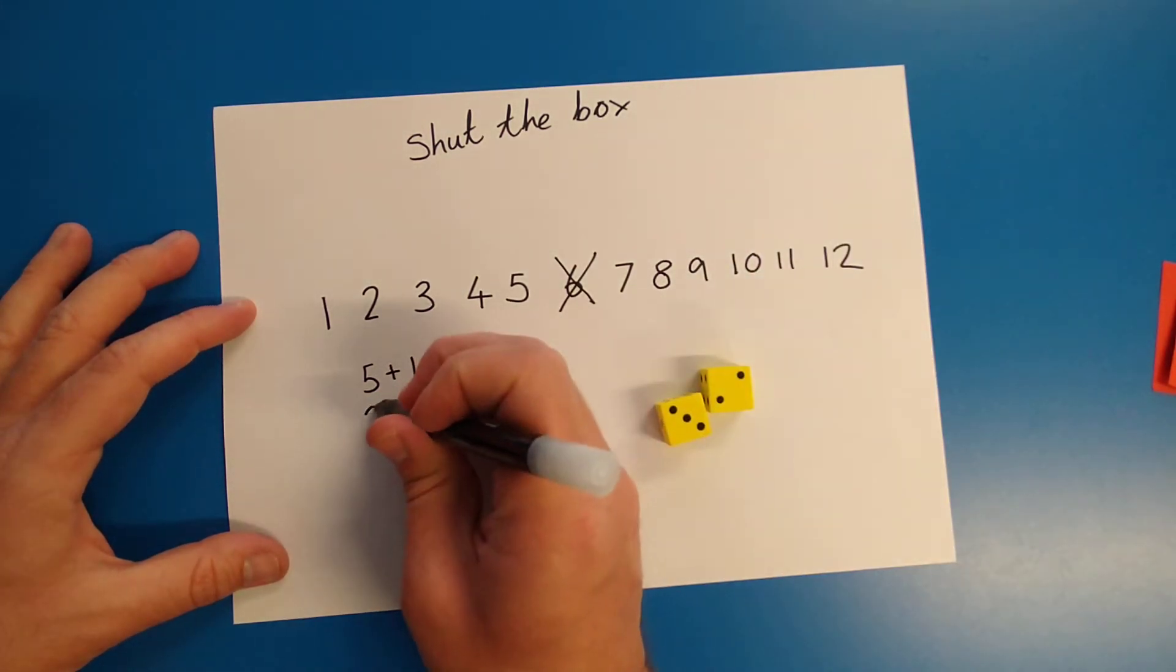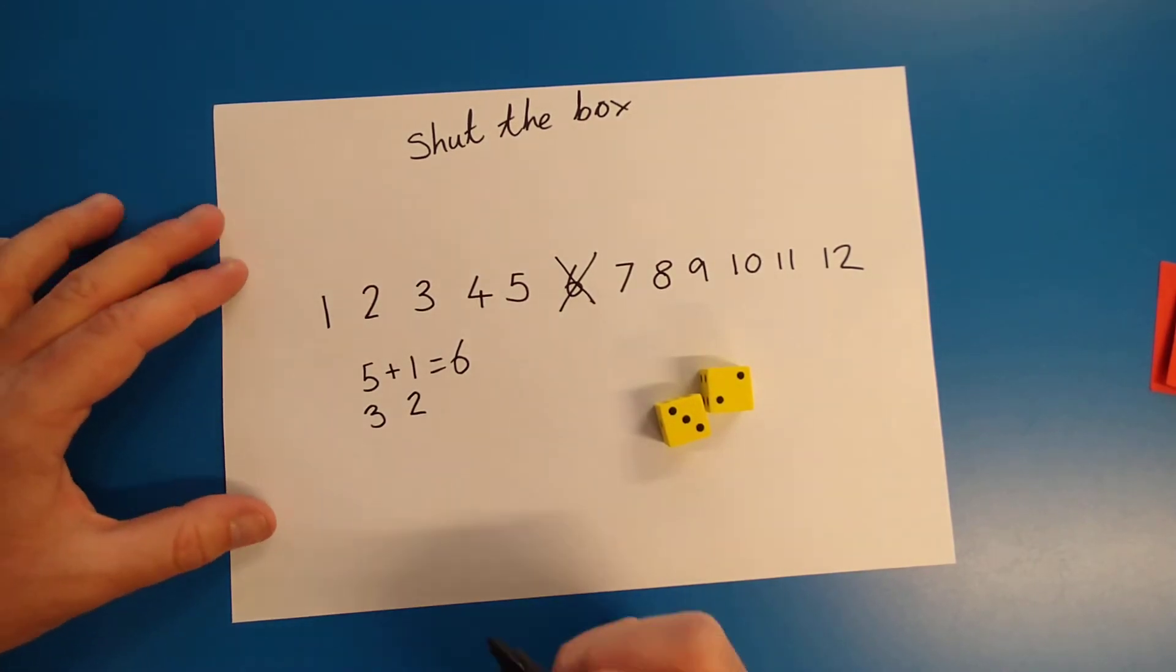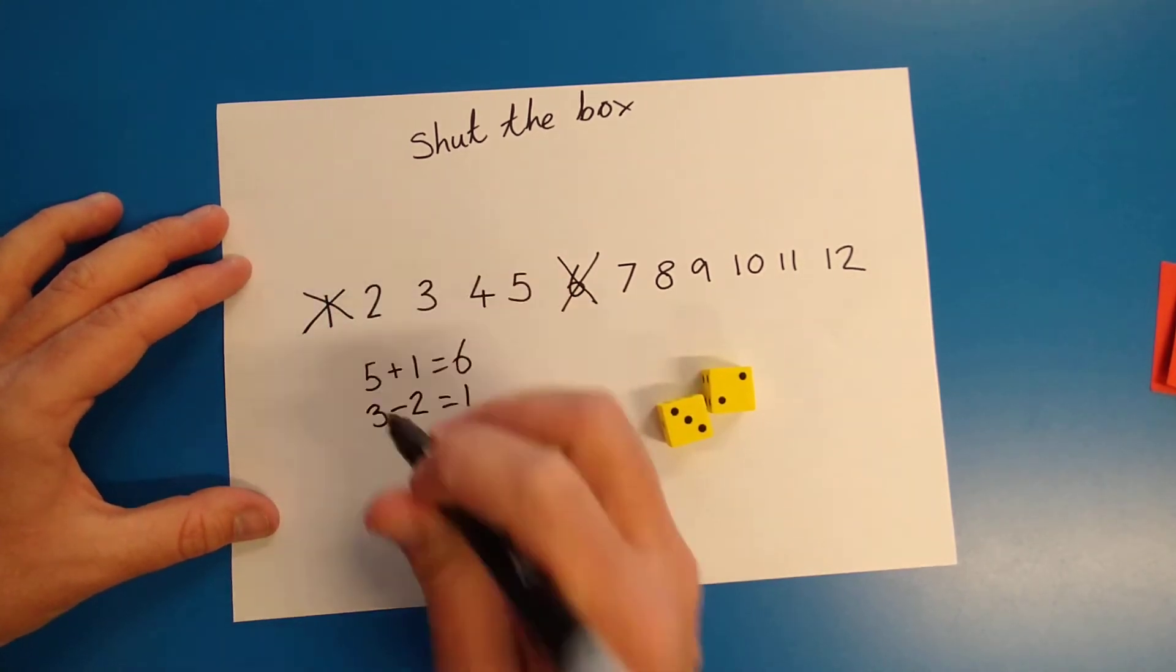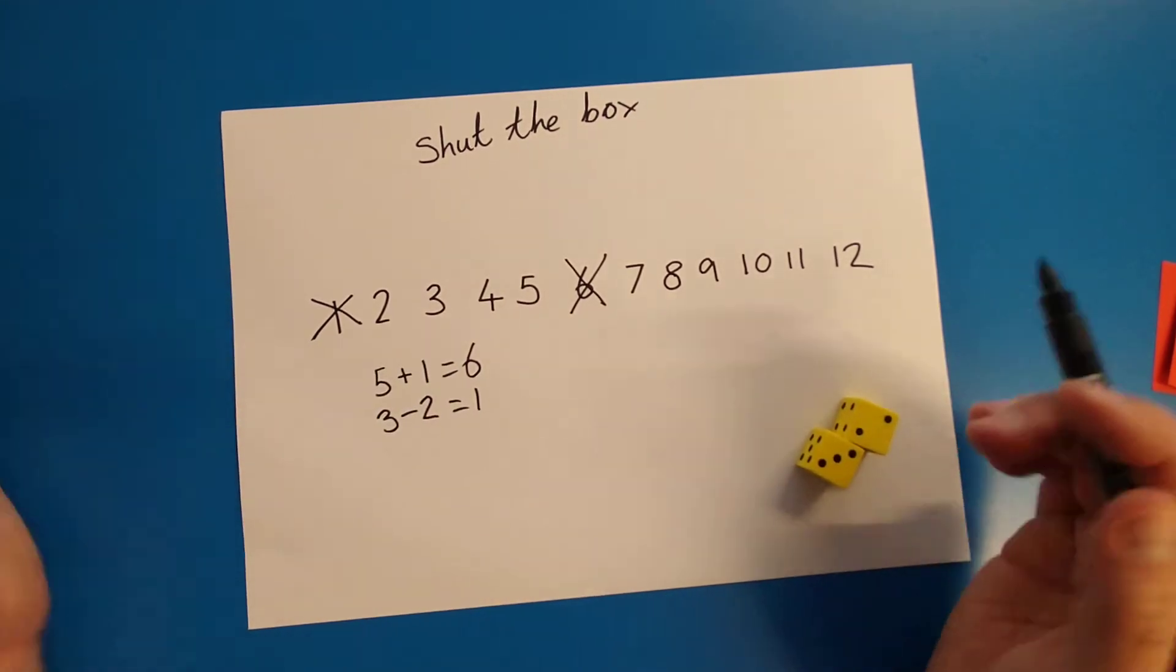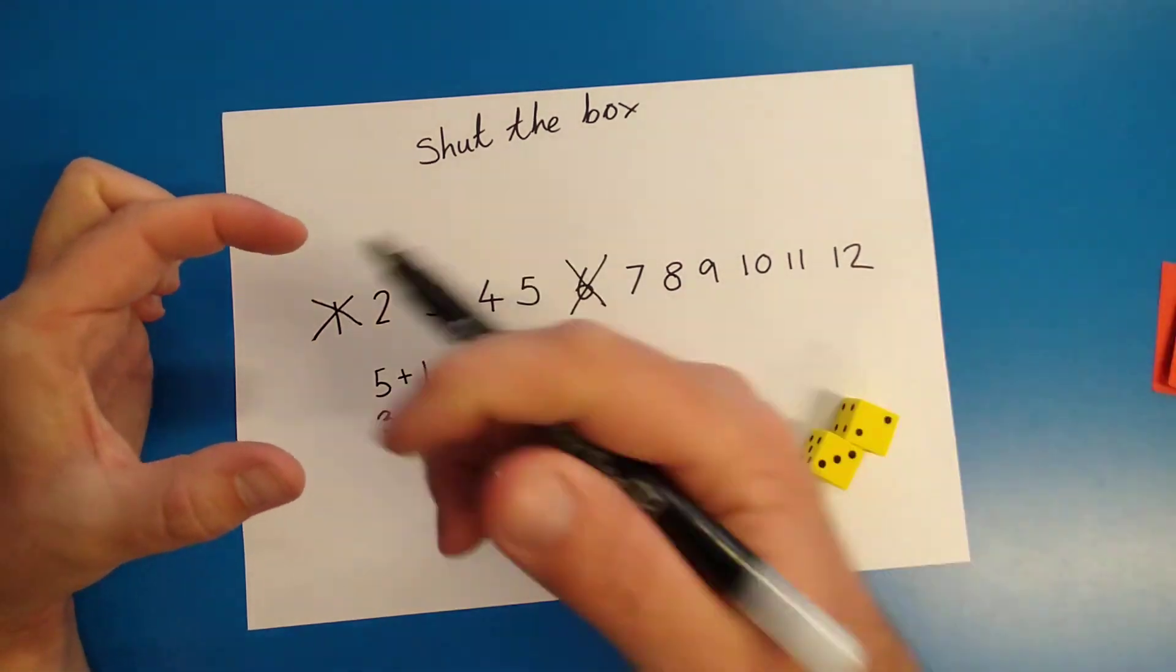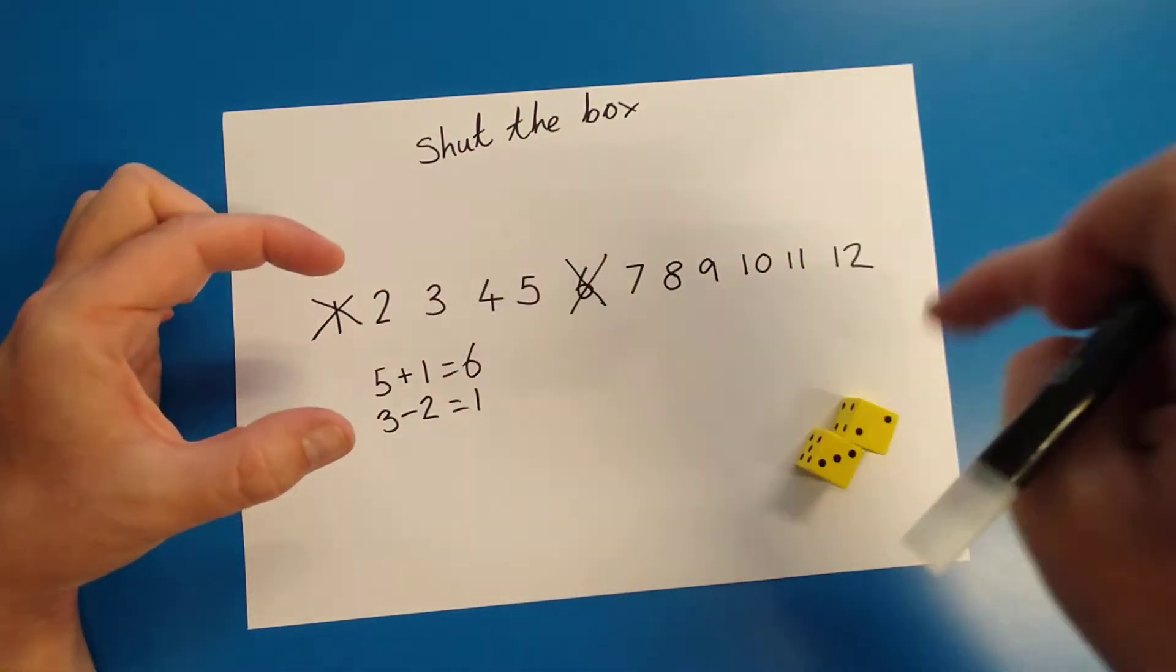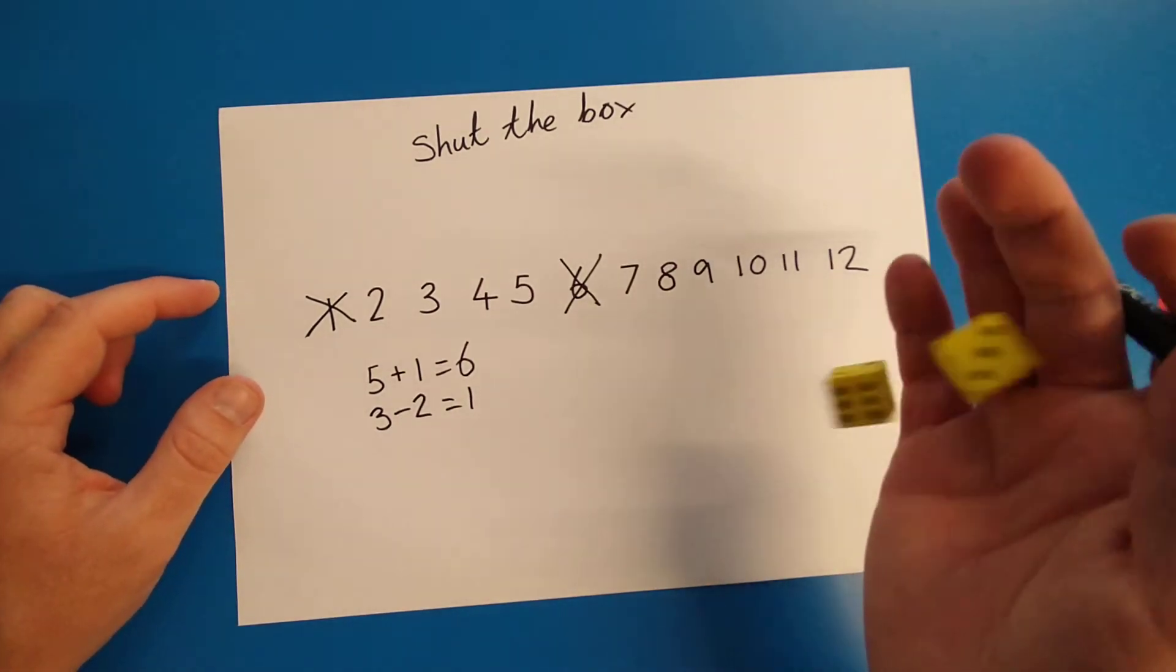Next one. Three and a two. Am I going to add these together or take them away? I'm going to take them away. Three take away two equals one. What I'm trying to do is I'm trying to get rid of all of these numbers to win the game. It's called shut the box because it used to be made out of a little wood and all the numbers would be on like a lid. And what you had to do was when you got the number, you put them down. So you were shutting the box.